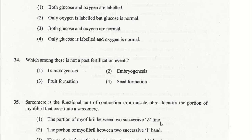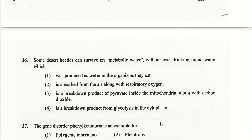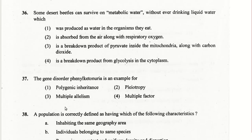The first option is the right answer for question 35. Desert beetles survive on metabolic water: a breakdown product of pyruvate inside the mitochondria along with carbon dioxide, and also a breakdown product from glycolysis in the cytoplasm. Both options 3 and 4 are right answers for question 36.